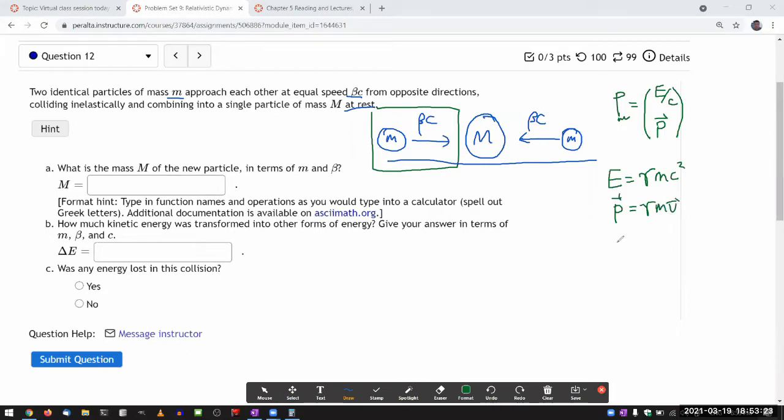Where needed, we will use these expressions, the common symbols that we define. Beta is v over c, speed in units of c.